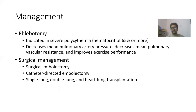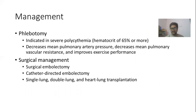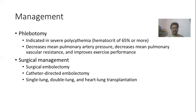If medical treatment is not adequate or the patient is not responding, surgical treatment might be needed. Phlebotomy can be performed in cases of severe polycythemia when the hematocrit is 65% or more; it decreases mean pulmonary artery pressure, mean pulmonary vascular resistance, and improves exercise performance. Other surgical options include surgical embolectomy or catheter-directed embolectomy for massive thromboembolism. Ultimately, the patient might require single lung, double lung, or heart-lung transplantation for the treatment of cor pulmonale.